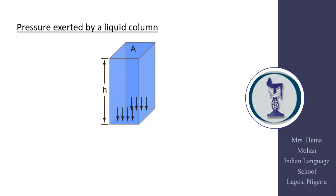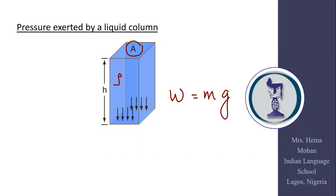Let's look at the pressure exerted by a liquid column. We are going to consider a cuboidal container whose base area is A, and the liquid is filled to a height h. On the base of the container, the thrust acting is nothing but the weight of the liquid column. By Newton's second law, weight W equals m times g.